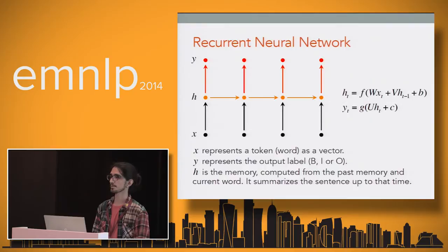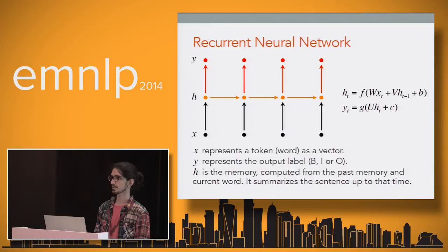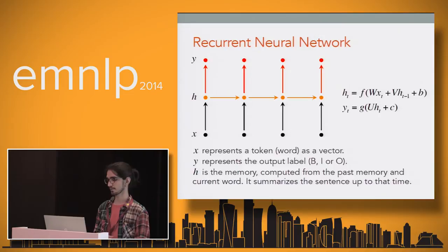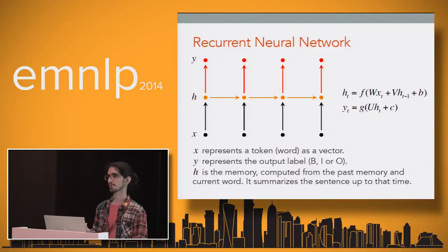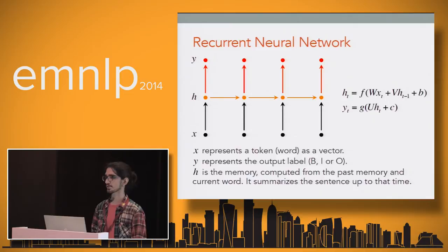A recurrent neural network is basically a neural network capable of processing sequences of vectors. X is the input sequence — in our case, word vectors representing the tokens in a sentence. Y is the output labels: Beginning, Inside, or Outside. H is the hidden or memory layer representing the extracted features. At every time step, the memory is a non-linear transformation of the past memory and the current input — a running memory state that you update each step, making a final decision based on this hidden representation.